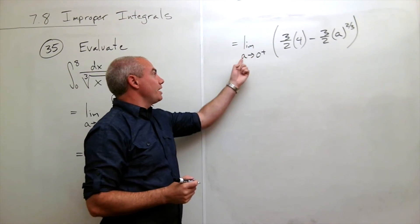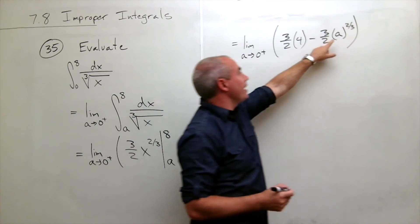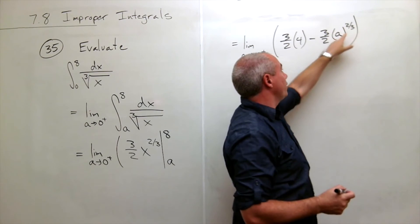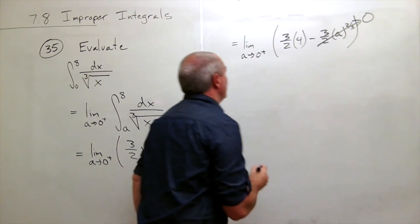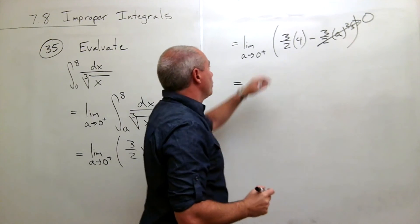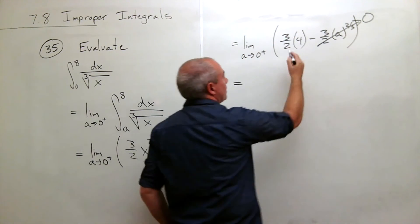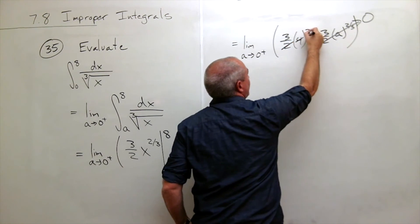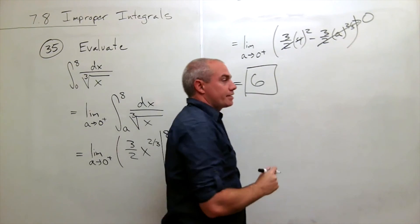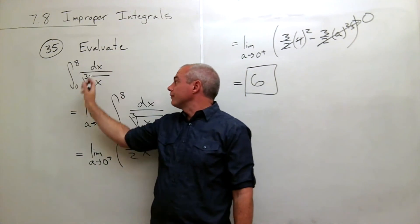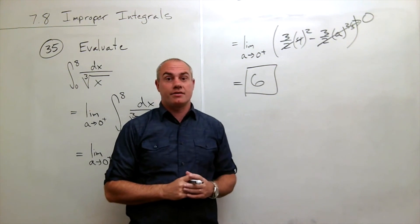Now I'm ready to take the limit as a goes to 0 from the right. As a goes to 0 from the right, 0 to the two-thirds, that's all just 0. So what are we left with here? We're just left with 3 halves times 4. And 3 halves times 4, I can cancel a 2 with a 4 and get a 2, and I'm left with 6. So we were able to evaluate this improper integral, and the answer is 6.